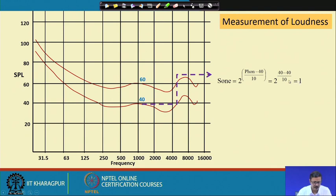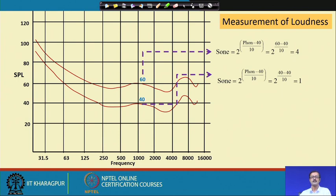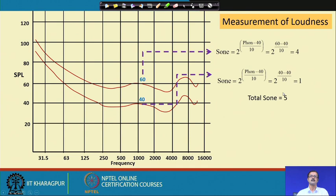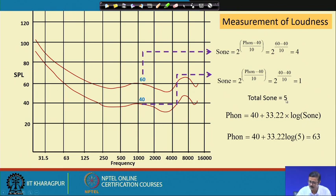Applying the sone scale to add loudness: 40 phons converts to 1 sone, and 60 phons converts to 4 sones. These can be added linearly: 1 + 4 = 5 sones total. Converting 5 sones back to phons: phons = 40 + 33.22 × log(5) ≈ 63 phons. So combining a 40-phon and a 60-phon source gives 63 phons — not 100 phons.